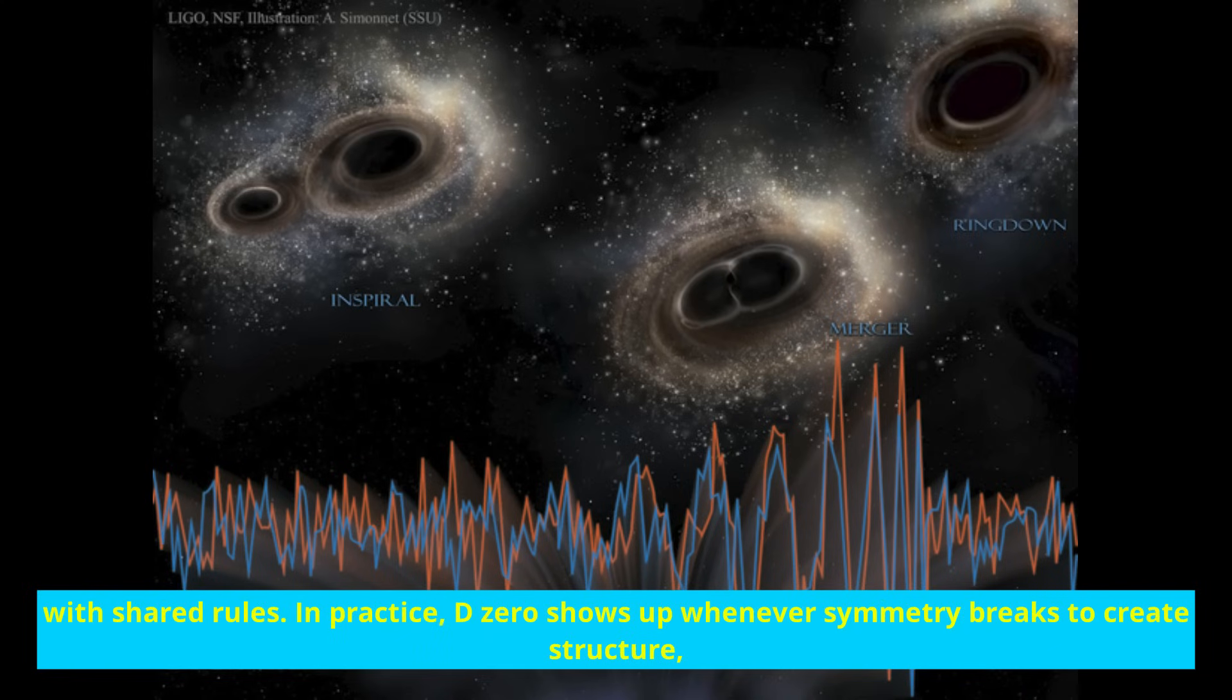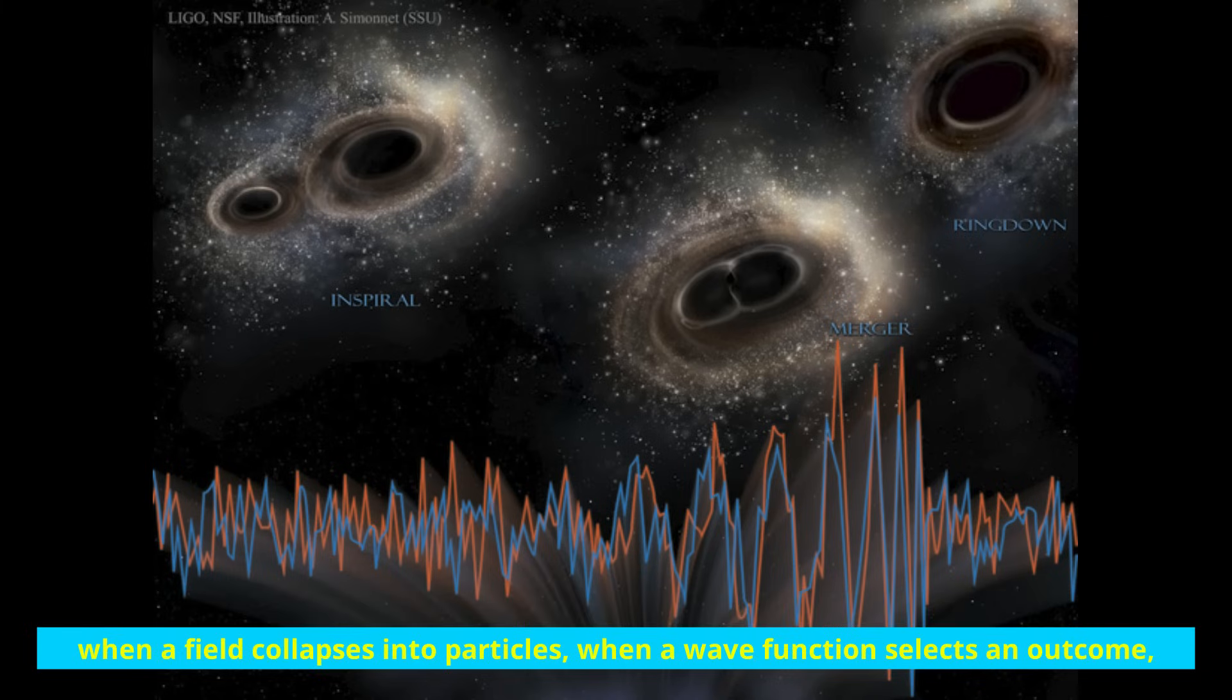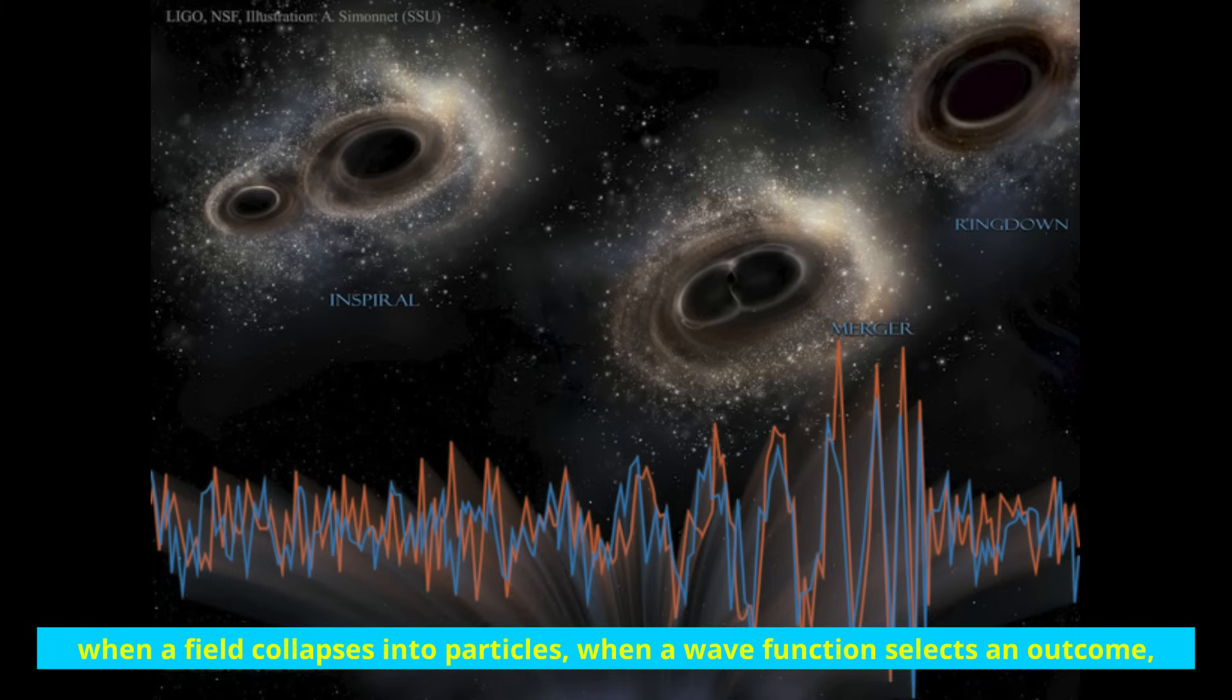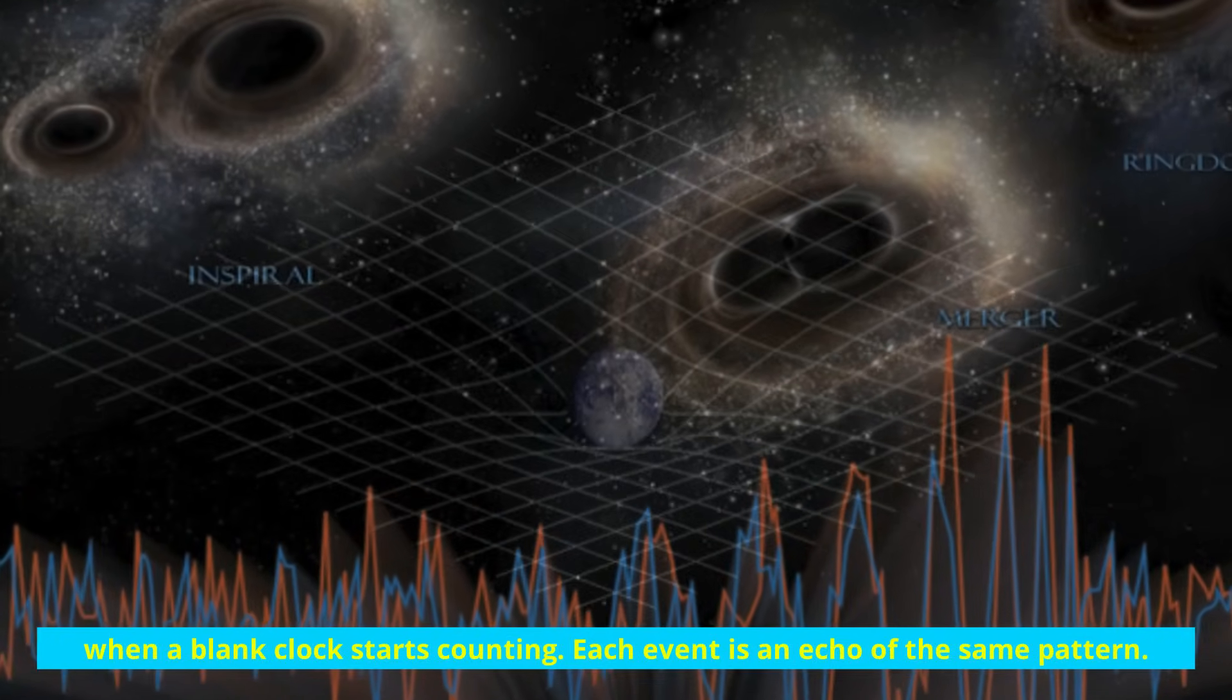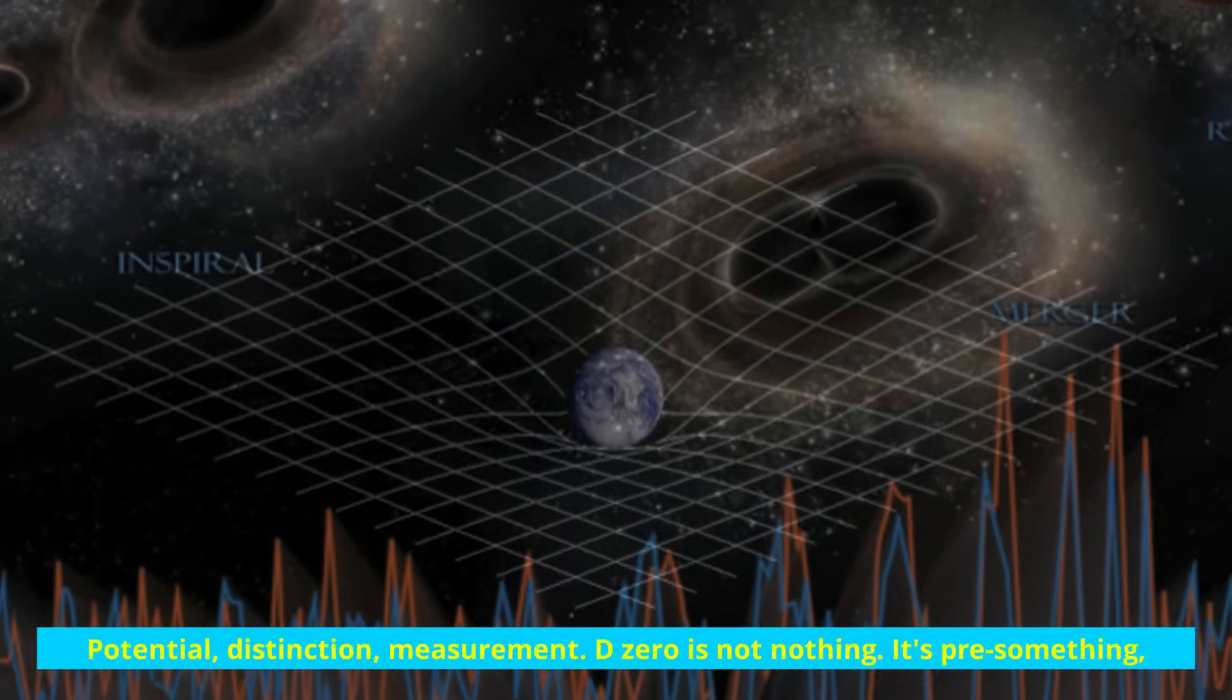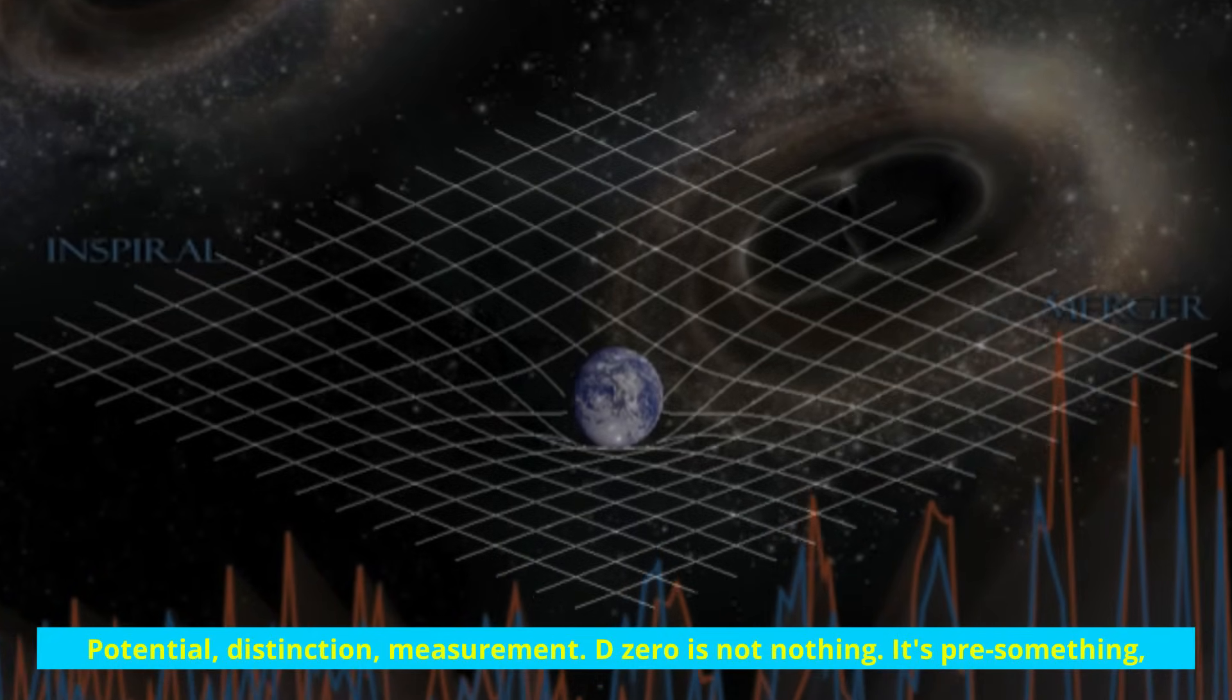In practice, D zero shows up whenever symmetry breaks to create structure. When a field collapses into particles, when a wave function selects an outcome, when a blank clock starts counting. Each event is an echo of the same pattern: potential, distinction, measurement.